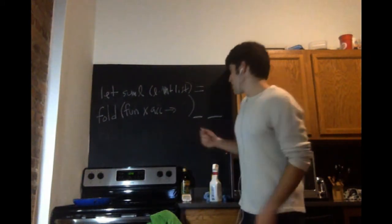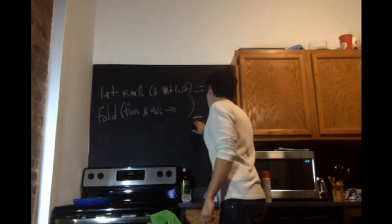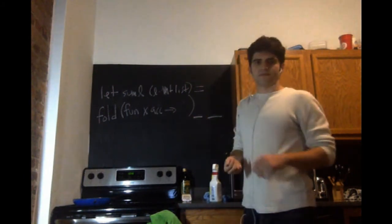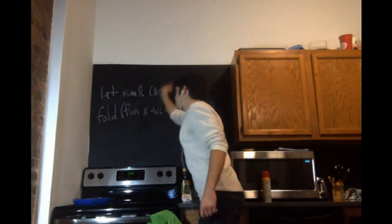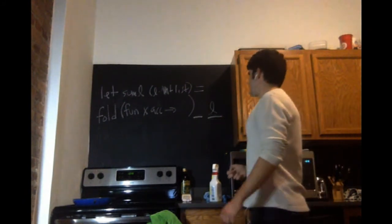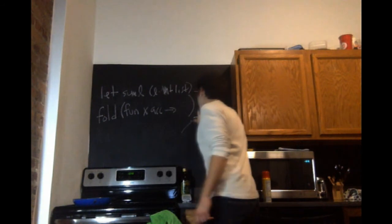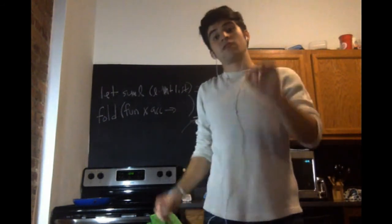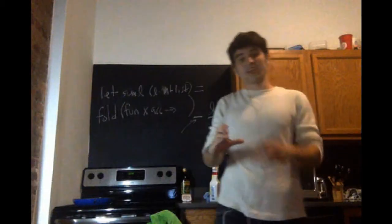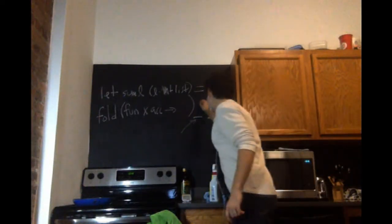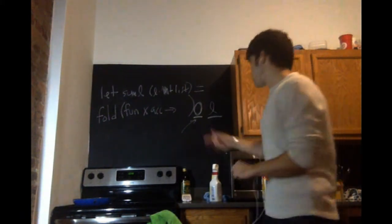Whenever you need to write a call to fold, the first thing to know is that there are three arguments: the anonymous function, the base case, and the list you're applying it to. The easiest one: what list are you going to apply it to? L — whatever L the user passes to suml. Then the base case. Ask yourself one simple question: what do I want the function to give if the list is empty? If we're trying to sum an empty list, we want it to be zero. So right from the get-go, asking those two questions gets you two-thirds of the work done.